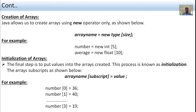Next, the creation of arrays. Java allows us to create arrays using the 'new' operator only. The syntax is: arrayName = new type[size]; For example: number = new int[5]; and average = new float[10];. Here, 'number' is the array name, the new operator is used, the data type is int, and the size is 5. Similarly, 'average' is the array name with float type and size 10.